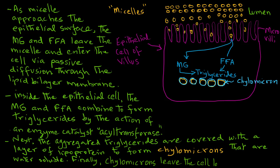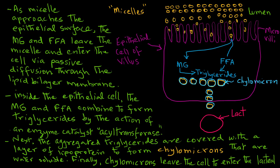The chylomicrons leave the cell by a process known as exocytosis to enter the lacteal. Note that in comparison to the absorption of amino acids for proteins and monosaccharides for carbohydrates, which enter the blood capillaries from the epithelial cells of the villi, the lipid-containing chylomicrons cannot enter the blood capillaries. Instead, they move into the lacteals and then into the lymphatic system.